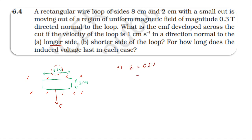For Case 1, induced EMF equals BLv. B is 0.3 tesla, L is 8 centimeter which is 8 into 10 power minus 2, and v is 1 centimeter per second which is 1 into 10 power minus 2. Multiplying these together gives the answer: 2.4 into 10 power minus 4 volt.